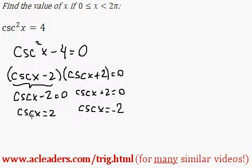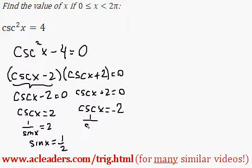I know that cosecant of x is 1 over sine x. So if I cross multiply, sine of x is half. Over here, same thing - we have 1 over sine x equals negative 2. Cross multiply and sine of x is negative half.